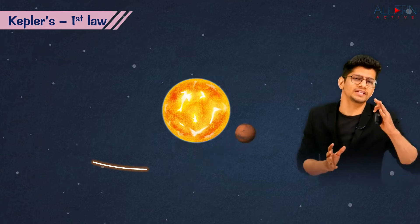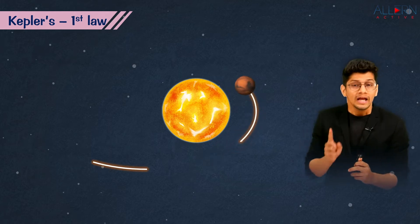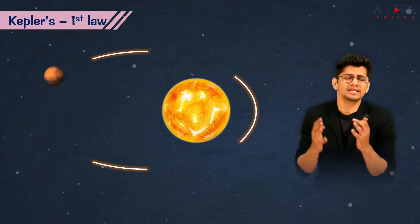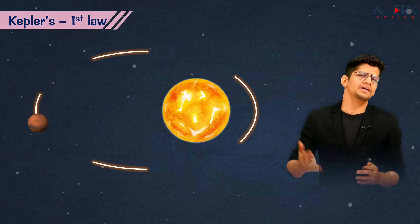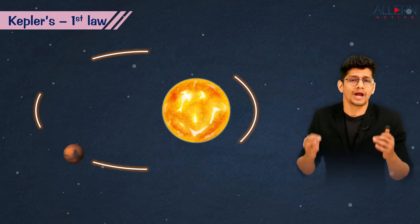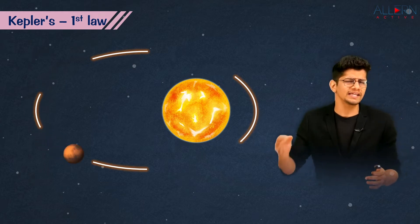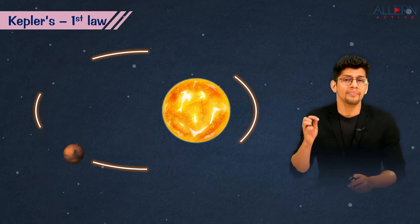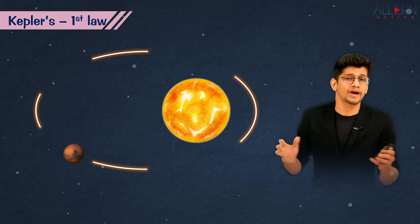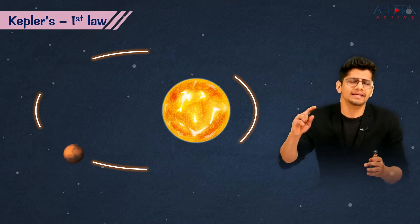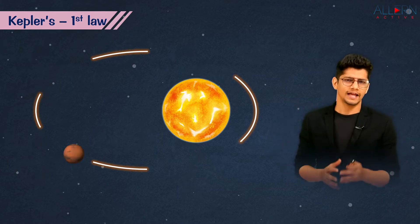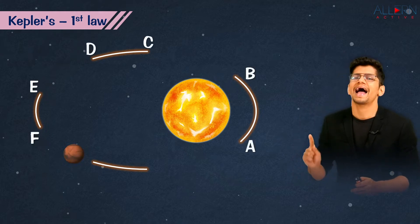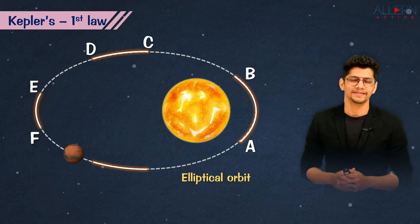He observed that the planet covered a certain distance in one day, then a different distance the next day, and yet another different distance the day after. He started plotting all the points and when he completed the observation, he was surprised to find that the orbit the planet took around the Sun was not circular — it was elliptical.